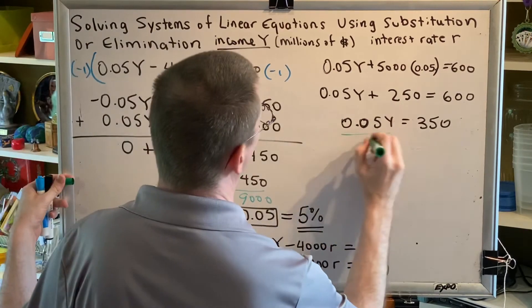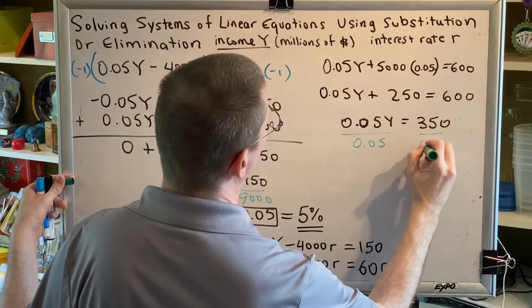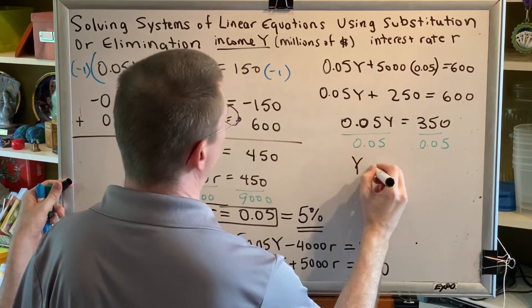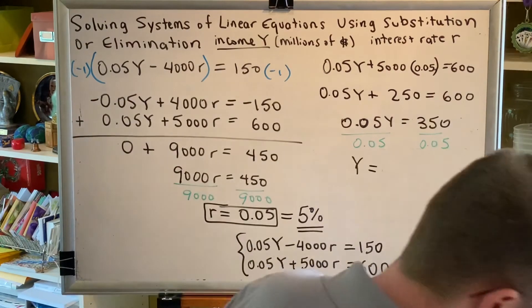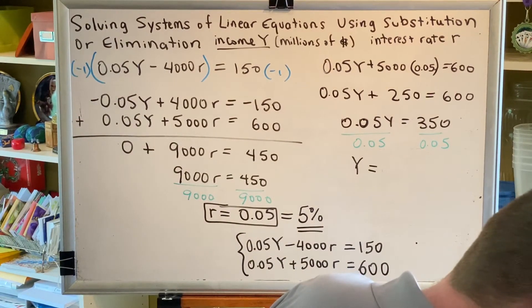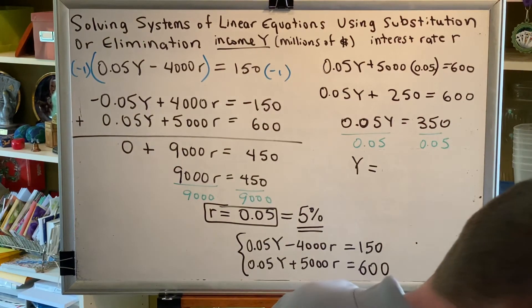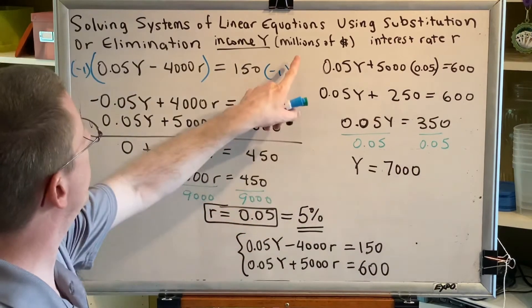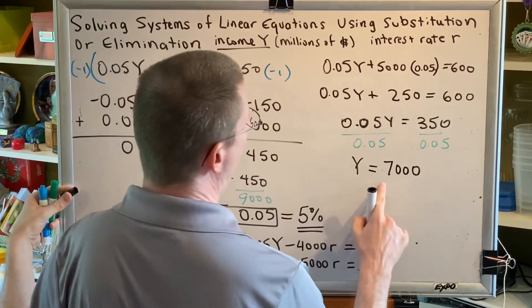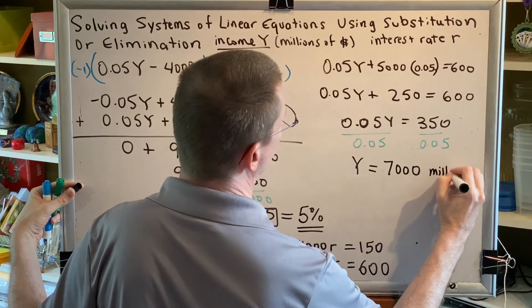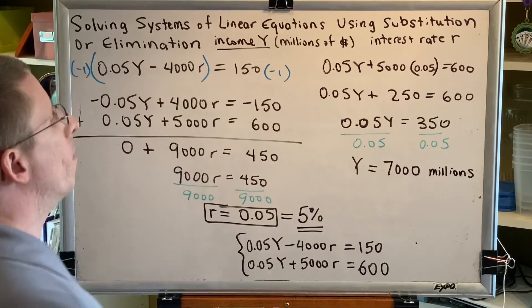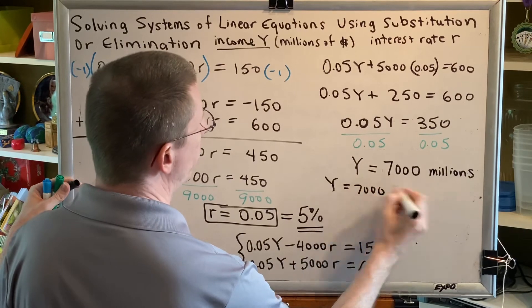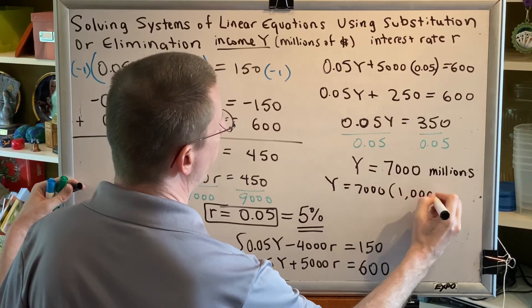Now divide by 0.05 on both sides. And this will give us the value of Y, which is the income. So 350 divided by 0.05 is 7,000. Now we have to be careful because this is measuring millions of dollars. So what we have is 7,000 millions. We might find that we need to convert that into an actual dollar value.